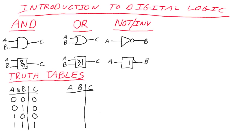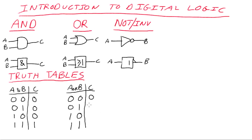Just like the name AND was descriptive of its functionality, OR is also descriptive of its functionality. We write the exact same input combinations as the AND gate — the four possible combinations starting at 0,0 counting up by convention. The functionality of an OR gate: the output is 1 if A or B is 1. So: is A or B 1? No, they're both 0 — output is 0. Is either A or B 1? Yes, B is 1 — output is 1. Is A or B 1? Yes — output is 1. And in the final case where they're both 1, it's still an OR function — so the output is 1. That's our OR gate.